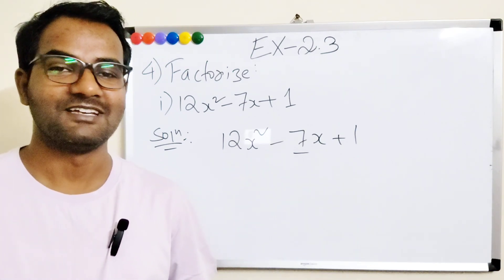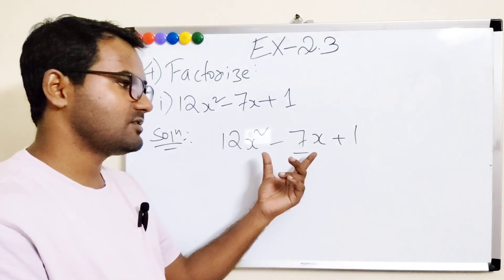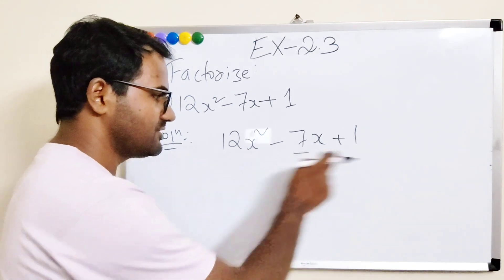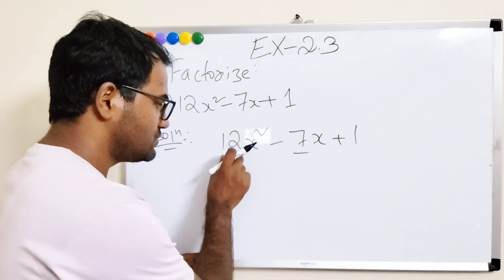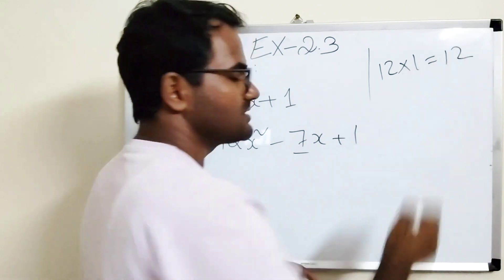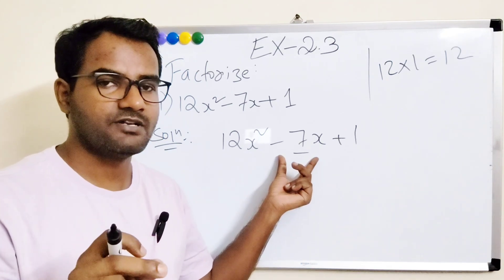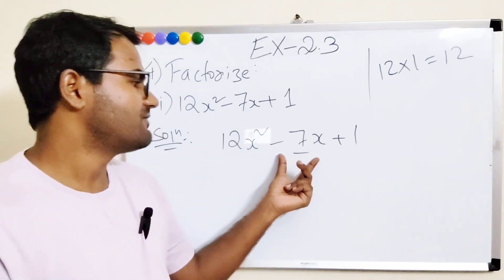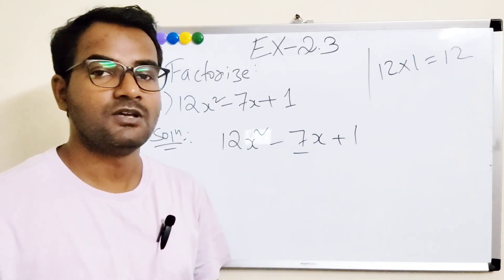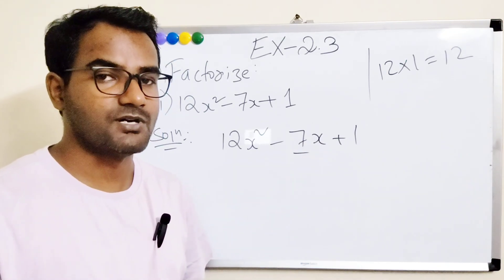You cannot just split it into 3.5 and 3.5. Before splitting, we multiply the first and last numbers: 12 into 1 gives us 12. Now we need to choose numbers such that when you multiply them you get 12, and when you add or subtract them you get minus 7.